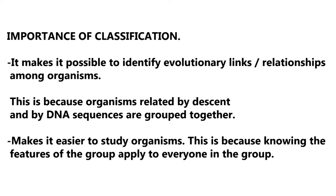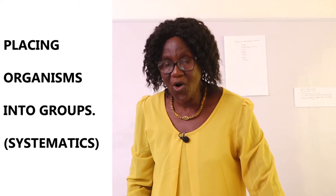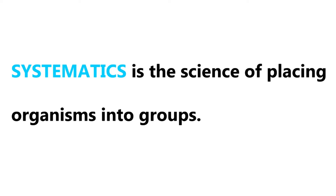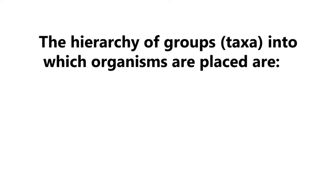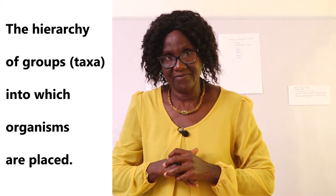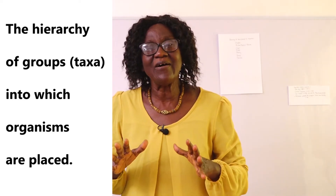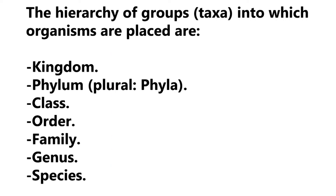Let us look at how organisms are put into groups. There's a term called systematics — the science of placing organisms into groups. A group is also known as taxa. Organisms are put into a hierarchy of groups: kingdom, phylum, class, order, family, genus, and species.